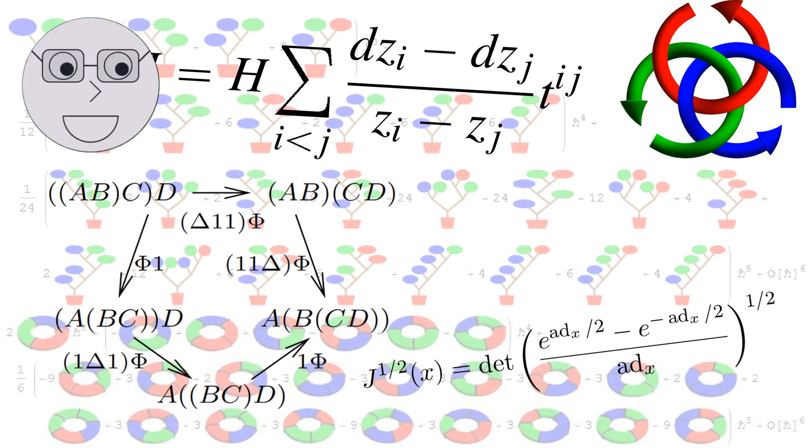The history of mathematical physics dates back to the ancient Greeks who used mathematics to explain the motion of celestial bodies. The works of Galileo Galilei and Isaac Newton in the 17th century laid the foundation for modern mathematical physics. Newton's laws of motion and his law of universal gravitation were based on mathematical principles and revolutionized the field of physics.